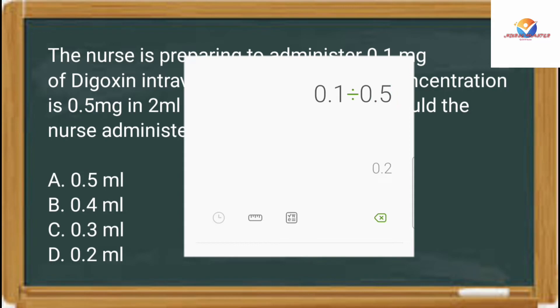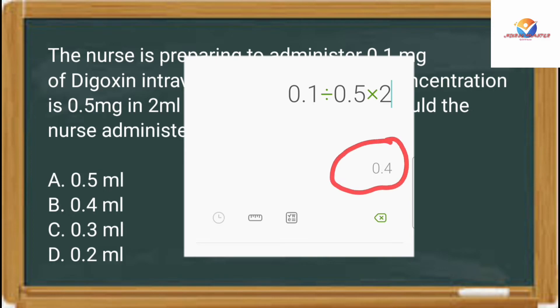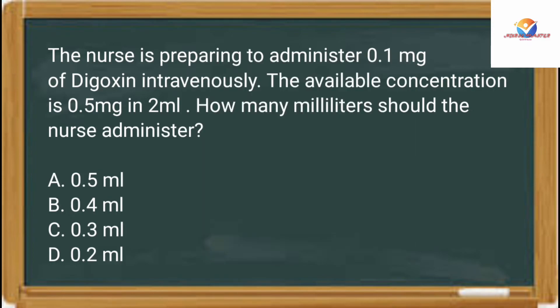Desired amount 0.1 divided by have available 0.5, multiplied by quantity 2 mL — so the answer is 0.4 mL.